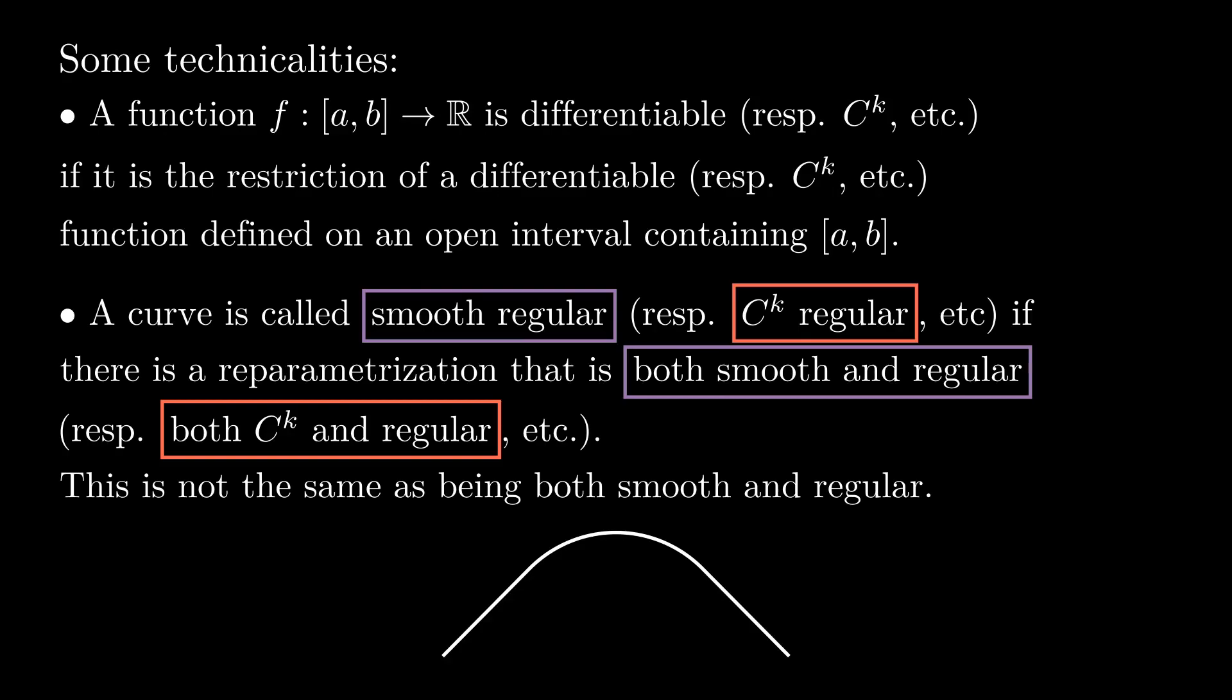It consists of a straight segment, followed by a piece of circle, and then another straight segment. We show here two particles. First, one following a smooth parametrization, and then one following a regular parametrization. However, we will see later that this curve does not admit a parametrization that is both smooth and regular.